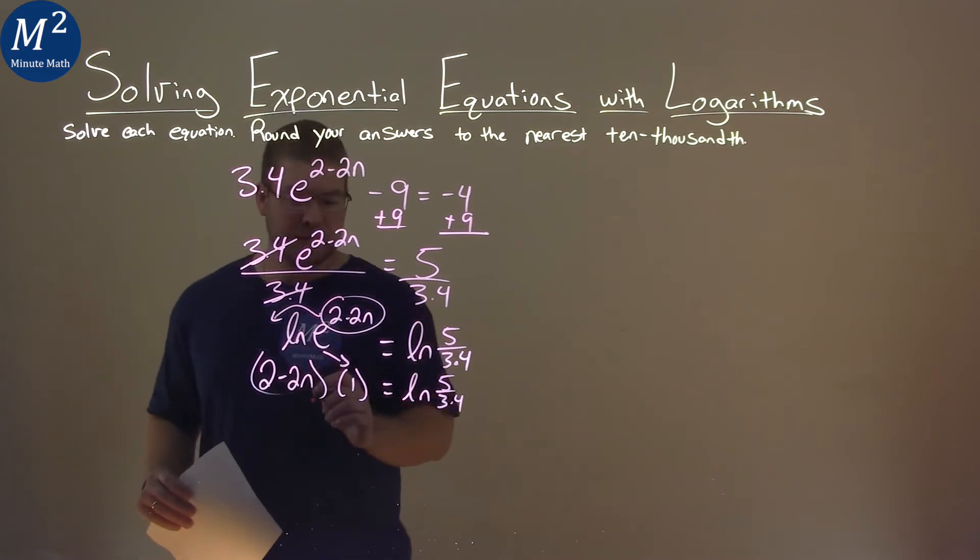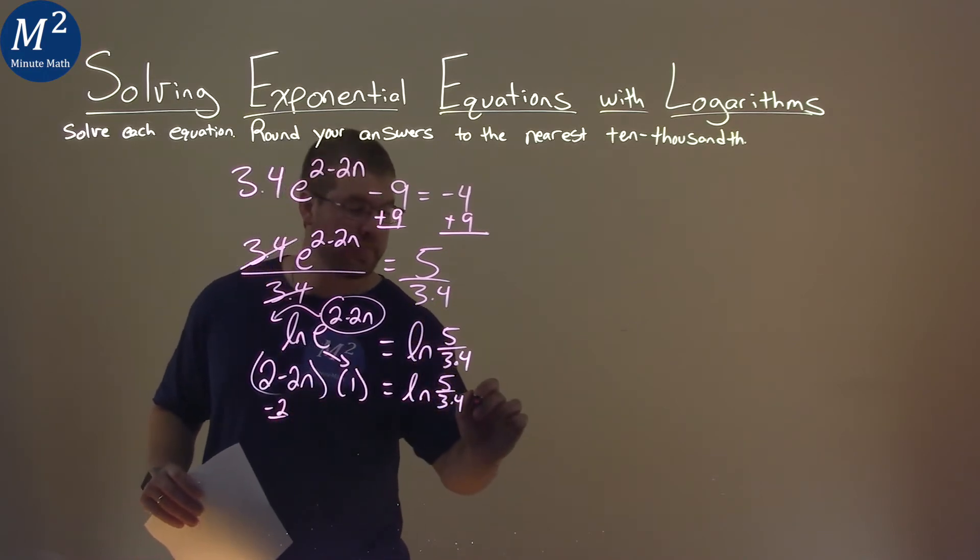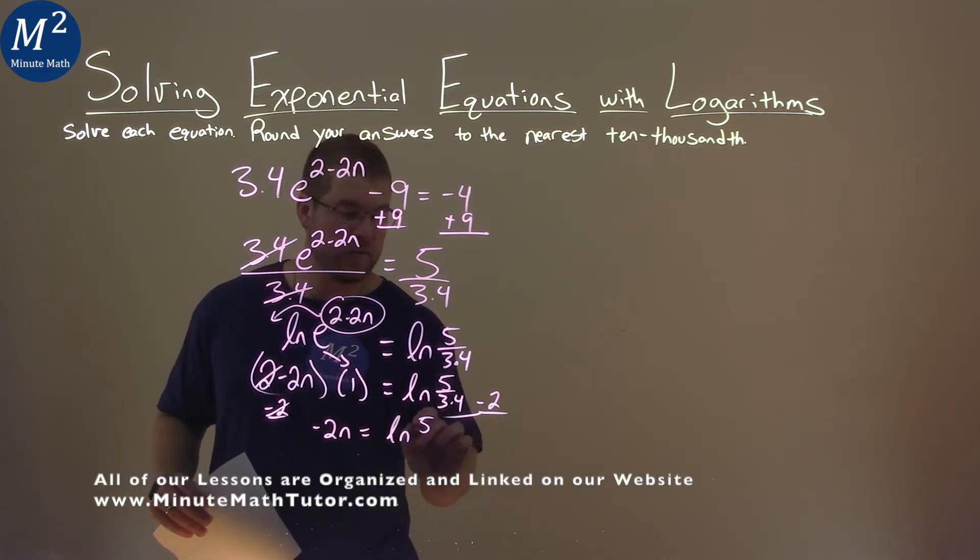So, with all that being said, we just solve for n here. So, our steps here, I'm going to subtract the 2 to both sides. The 2 cancels here, and we have negative 2n left over is equal to natural log of 5 over 3.4 minus 2.